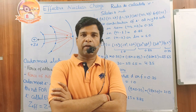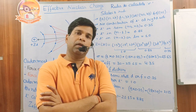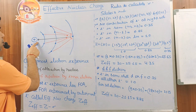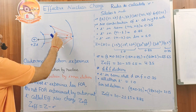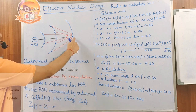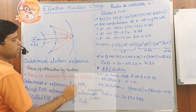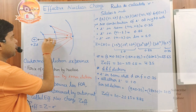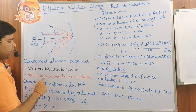We will discuss the effective nuclear charge. In an atom, one electron is attracted by the nucleus, but at the same time all the inner electrons also carry negative charge, so these inner electrons repel the outermost electron. The outermost electron experiences a force of attraction by the nucleus — this black line indicates the force of attraction by the nucleus.